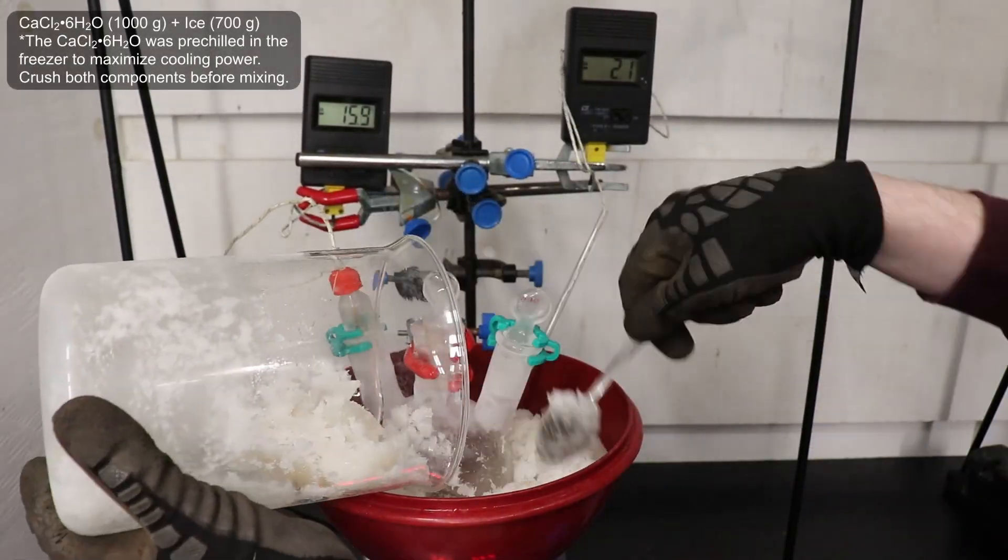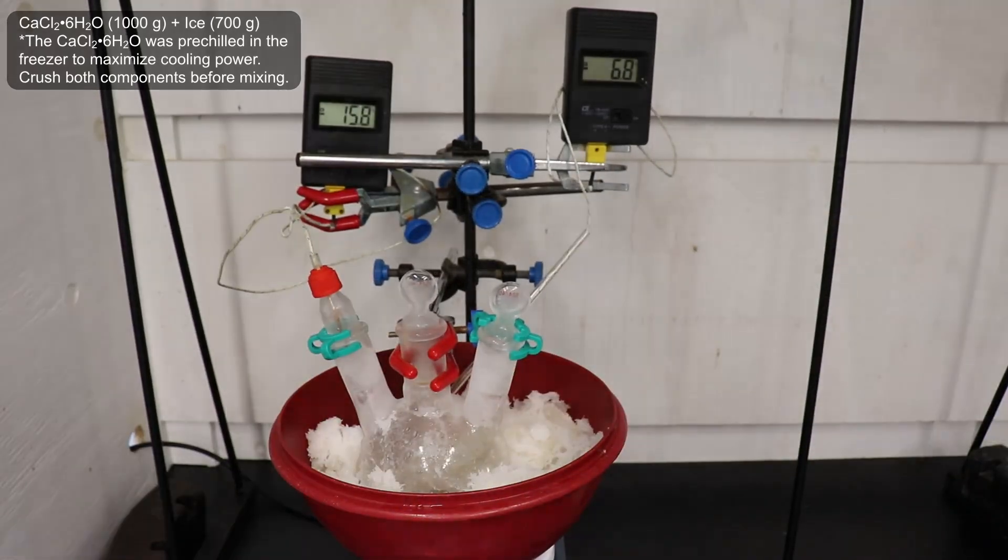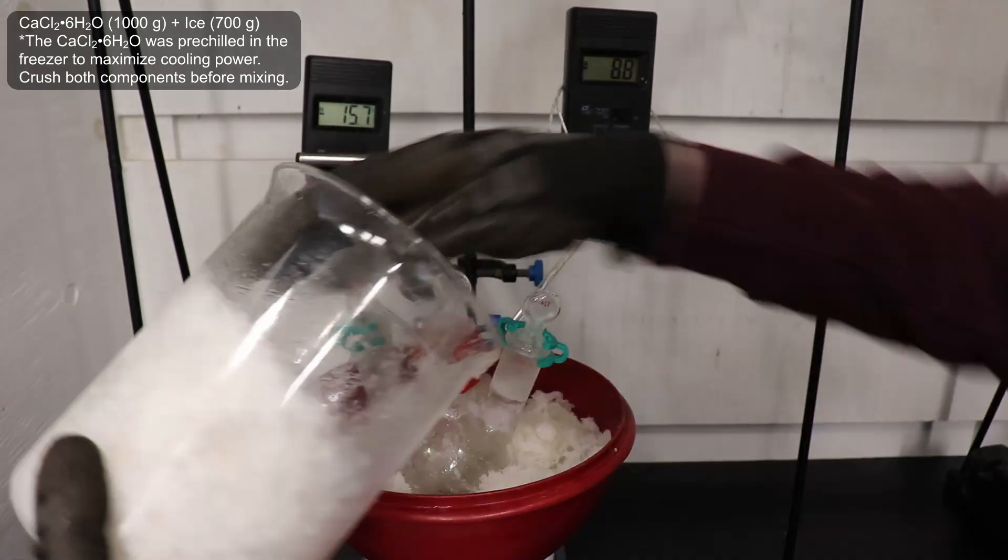I took the flask out of the freezer and placed it in a large bowl. To this bowl, I added 1 kg of calcium chloride hexahydrate, which I had pre-chilled in the freezer, and 700 g of ice.